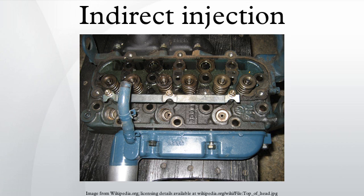The engine requires glow plugs for starting. In an indirect injection system the air moves fast, mixing the fuel and air. This simplifies injector design and allows the use of smaller engines and less tightly toleranced designs which are simpler to manufacture and more reliable. Direct injection, by contrast, uses slow-moving air and fast-moving fuel. Both the design and manufacture of the injectors is more difficult.